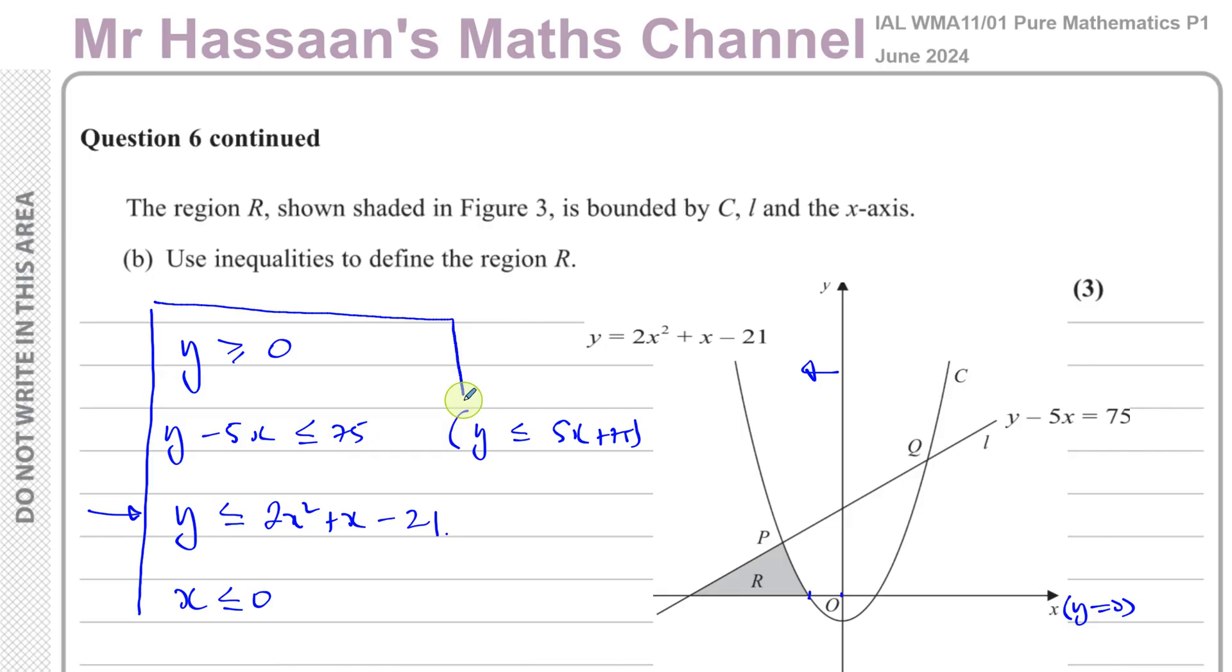So those are the inequalities that define the region R properly. If we don't leave this in there, then that side should also be shaded, so it's not. So it's been excluded. So I could write x is less than 0, I can write x is less than this point where it cuts the x-axis, I can write x is less than or equal to that point where it cuts the x-axis. It really doesn't matter. But I'll just put less than here because it can't be equal to there.